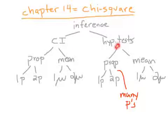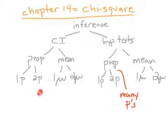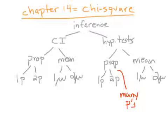We've talked about hypothesis tests for one proportion and hypothesis tests for two proportions. Really what chi-squared is, it's a hypothesis test for many different proportions — three proportions, four proportions, five proportions, something like that. Notice that there's no such thing as a chi-squared confidence interval. So that's what we're going to talk about today. Let's look at a couple of examples.